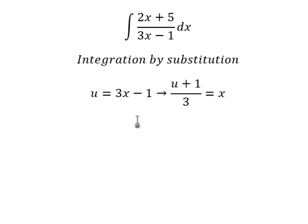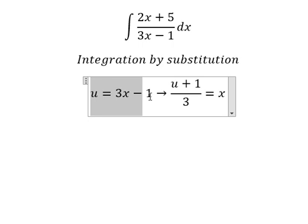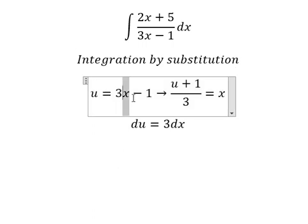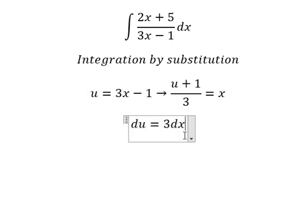Next we need to find the derivative of this one and you get du equals 3dx. This one we have number one, this constant gives you zero. So we need to divide both sides by number three to get du over 3 equals dx.